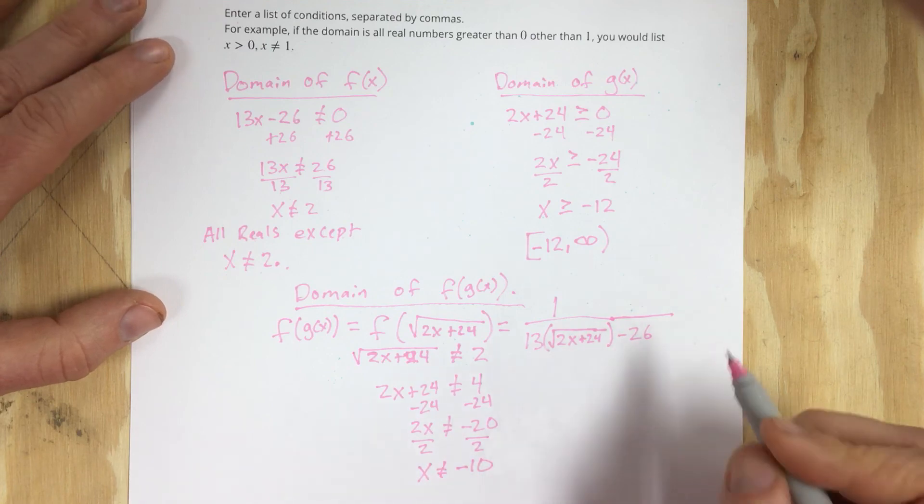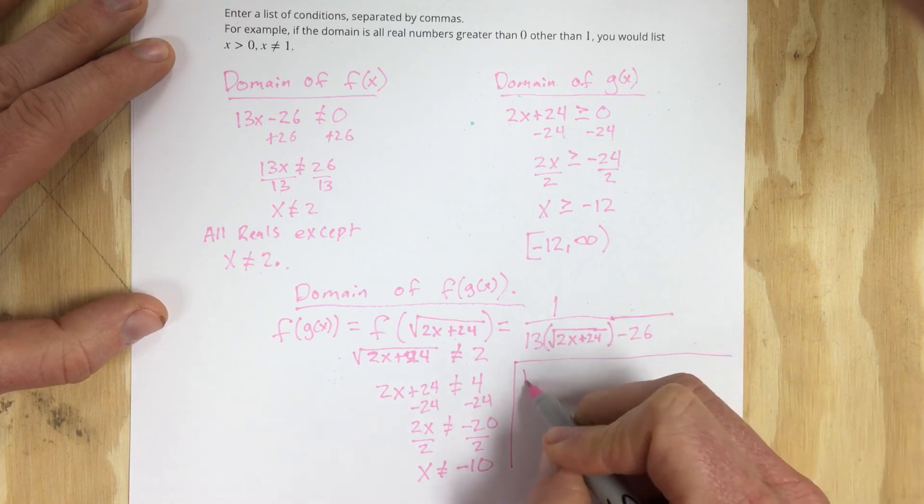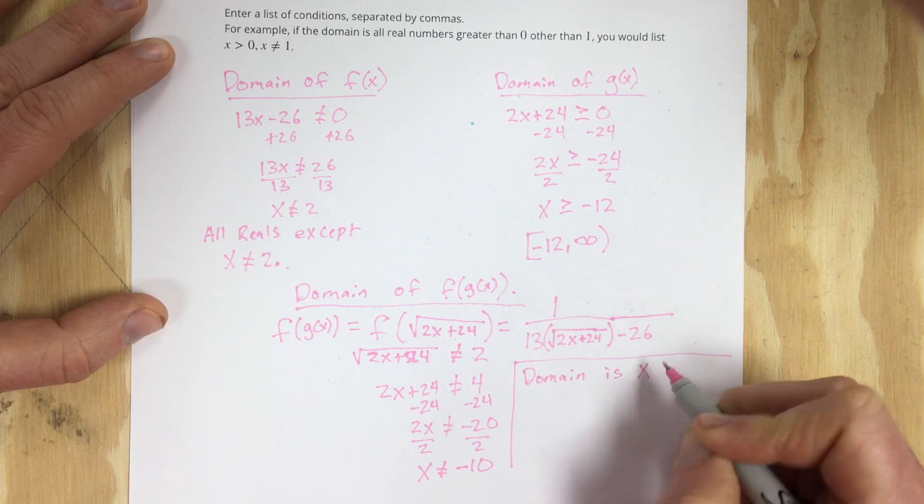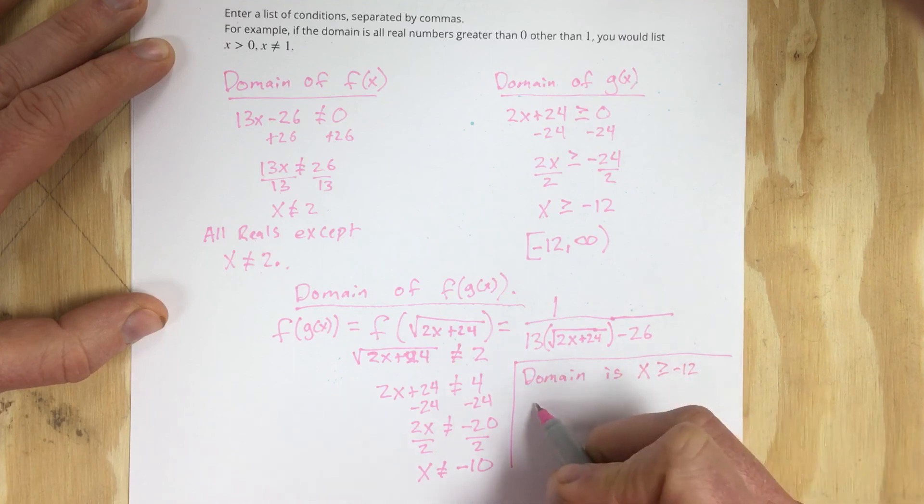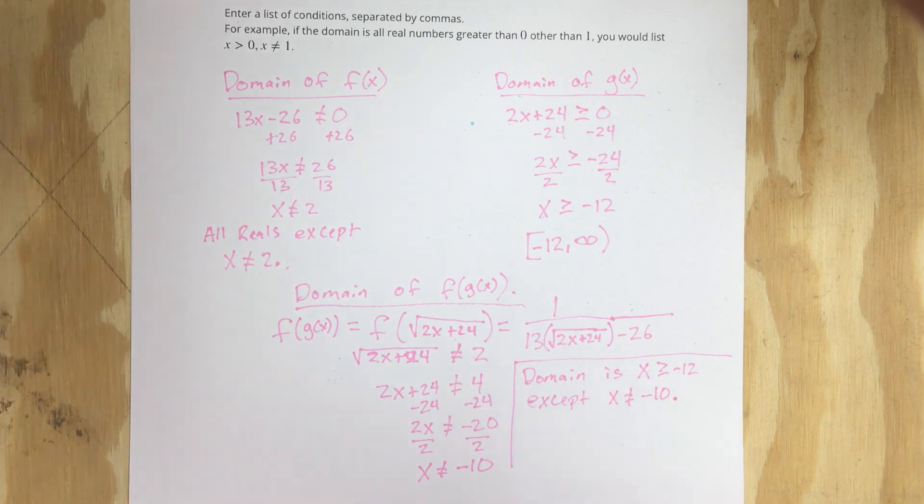So what I need to say for the domain, I'm going to say domain is x greater than or equal to negative 12, except x cannot equal negative 10. And that would be the domain of the function f of g of x.